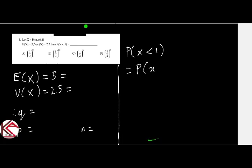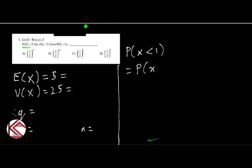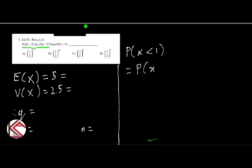Let X be Binomial(N, P). If E(X) equals 5 and variance equals 2.5, then P(X < 1) equals? Here we have mean = 5 and variance = 2.5. The mean formula is NP and variance is NPQ. So NP = 5.